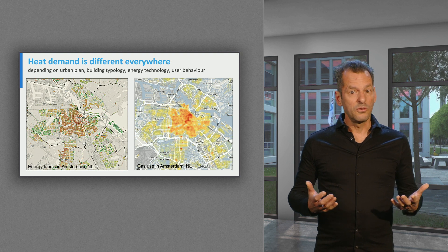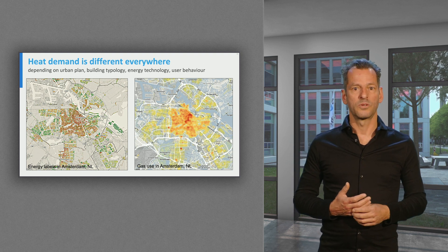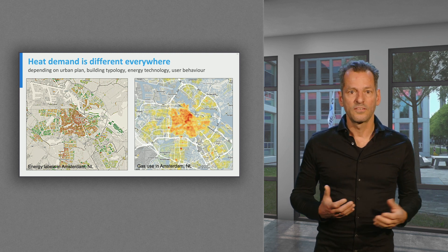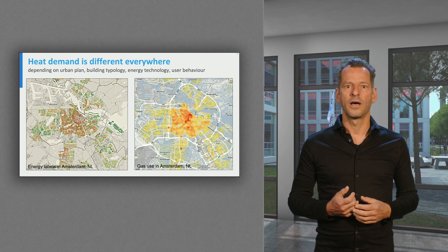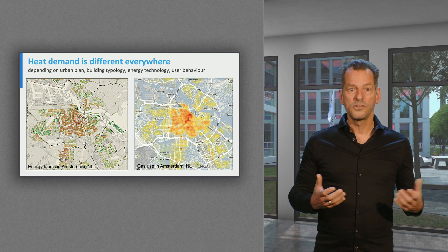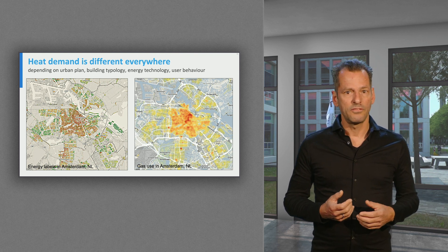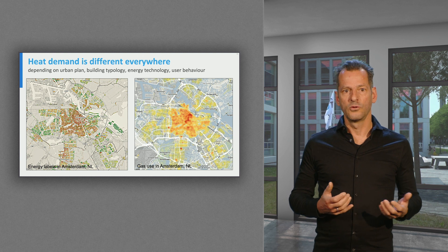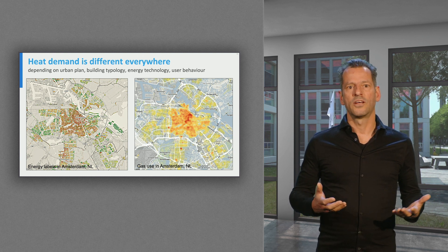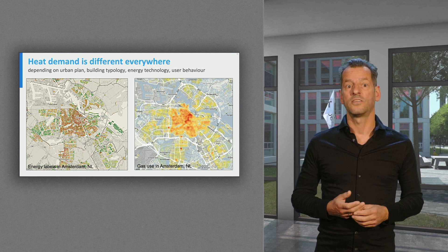It's good to understand that demand for heat — domestic heating in particular — depends on the urban design, building typology, energy technology applied, and user behavior. Here you see a map of Amsterdam, with its energy labels on the left and the use of natural gas on the right. You can distinguish the area that uses most energy for heating — the historic inner city.